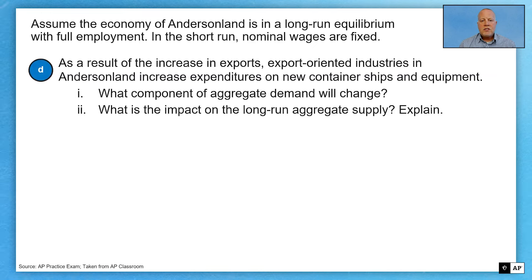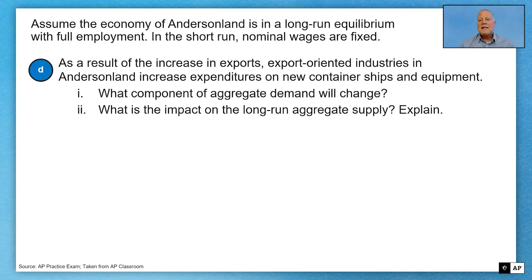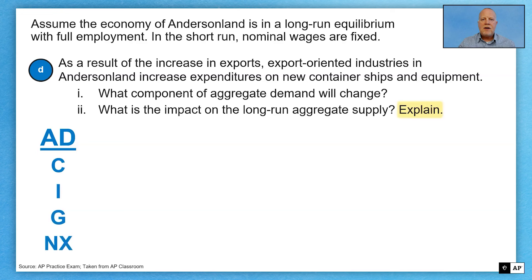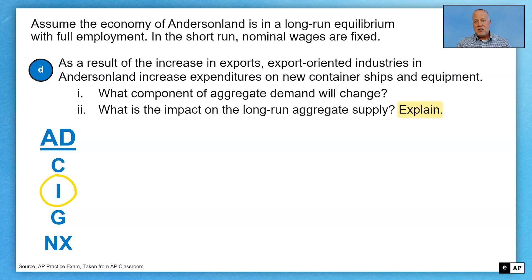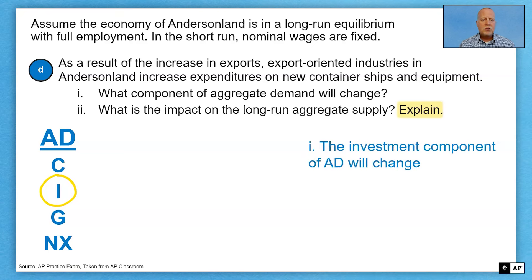Part D: as a result of the increase in exports, export-oriented industries in Anderson Land increase expenditures on new container ships and equipment. First, what component of aggregate demand will change? There are four components to aggregate demand: C, I, G, and NX — consumption, investment, government spending, net exports. Export-oriented industries spending on container ships and equipment is investment spending — business spending on capital. So the investment component will change. In the short run, investment spending affects aggregate demand as firms purchase new capital.